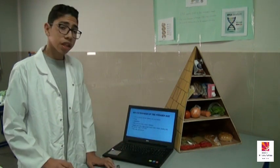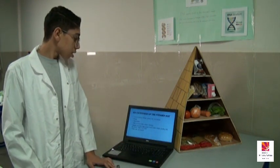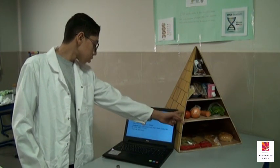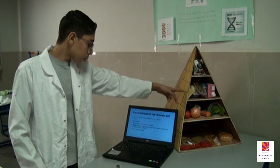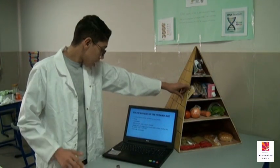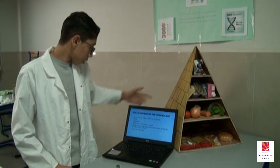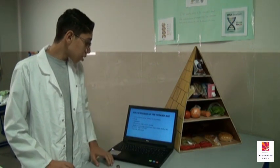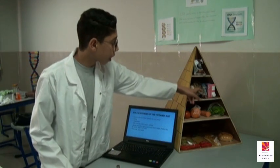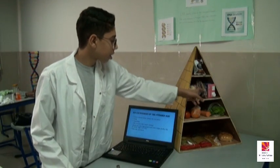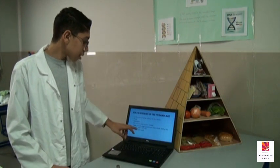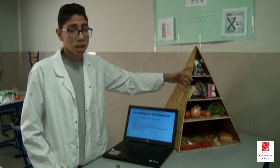There are six categories of the pyramid. First, grain products — bread, cereals, and pasta. Second is fruits and vegetables. Third, milk products like milk, yogurt, and cheese. Fourth, meats and other high-protein foods — lean meats and fish. For example, we have chicken and milk here. And finally, fats, oils, and sweets — for example, chocolate.